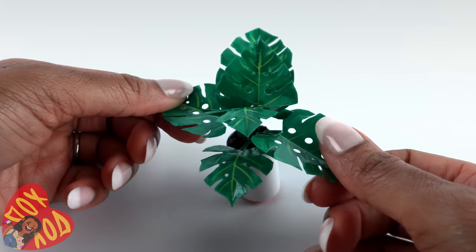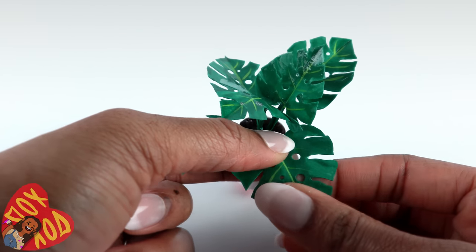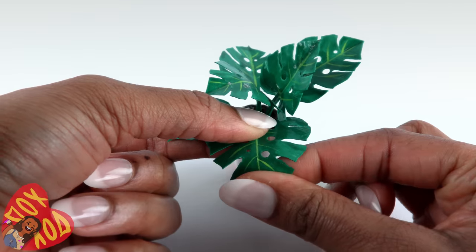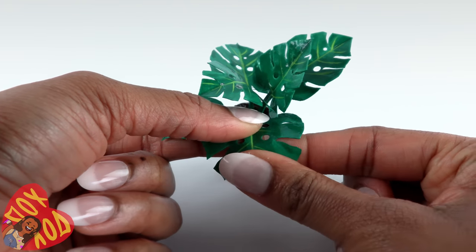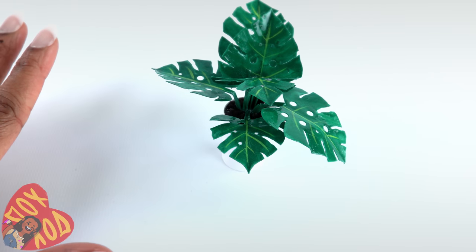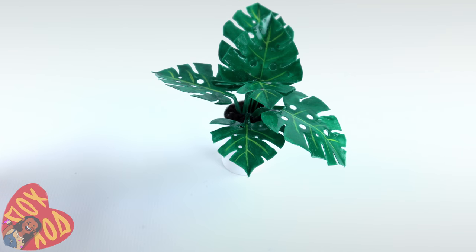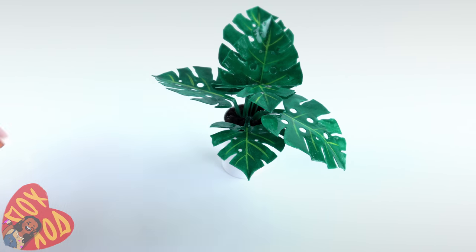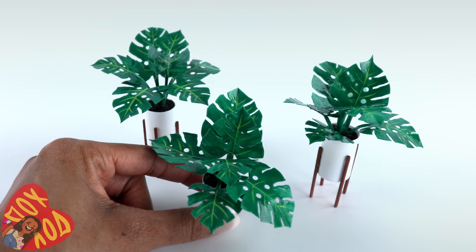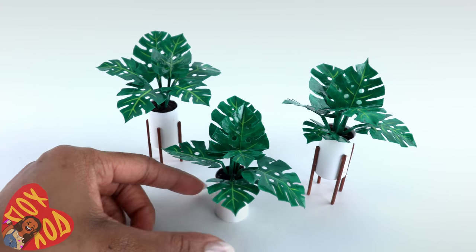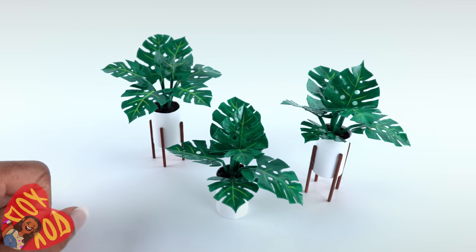You don't want to wait too long to bend those leaves because once the nail polish cures, like overnight, then they can crack. If you don't want to use nail polish, a good substitute is Mod Podge or a clear drying school glue. At this point, we could say that this plant is done. But if we want to take it a step further...